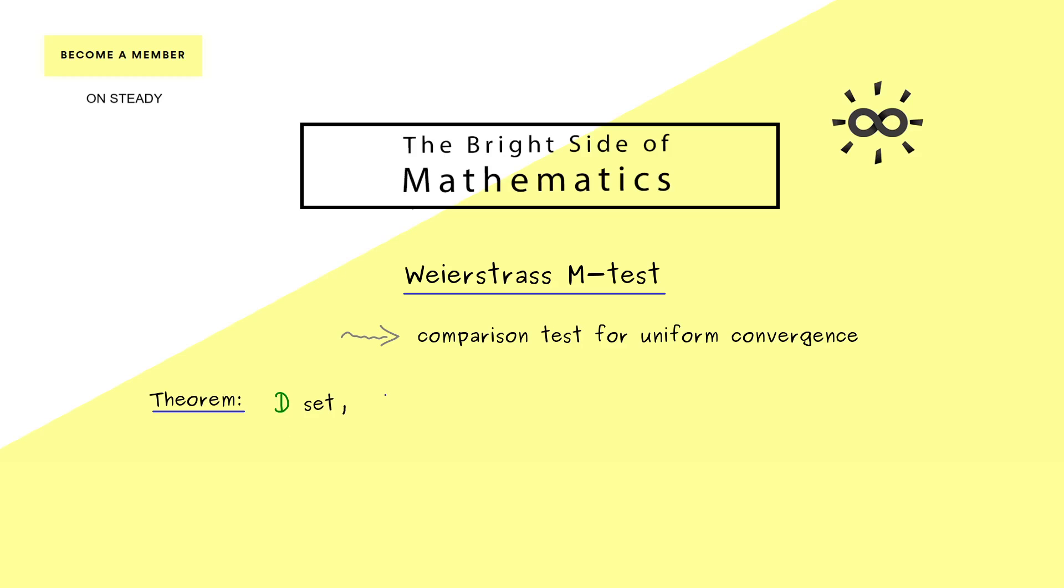Hence, our functions fk should have D as their domain. And now the functions could be real valued or complex valued. So in general, we could just write that they map into the complex numbers. And then we have a function for each k in the natural numbers. So already a whole sequence of functions with the same domain D. However, for the Weierstrass M-Test, we are interested in the partial sums, so the series of these functions.